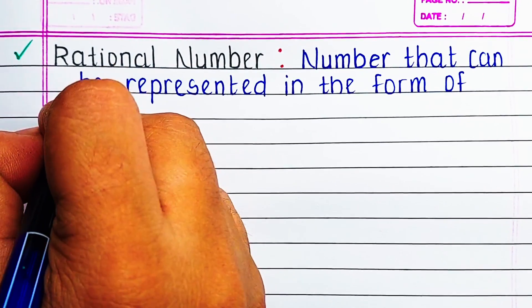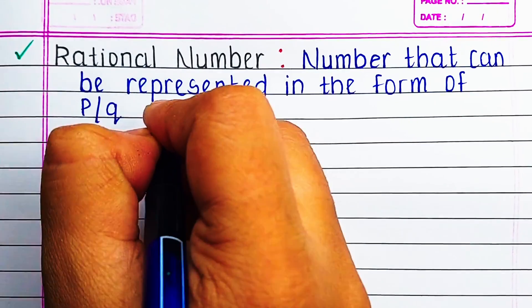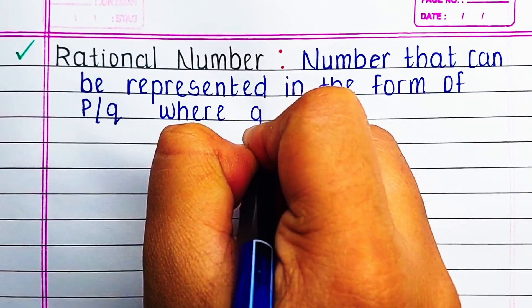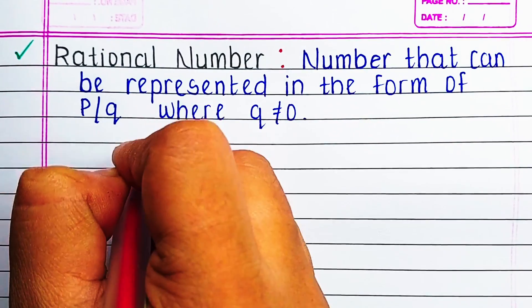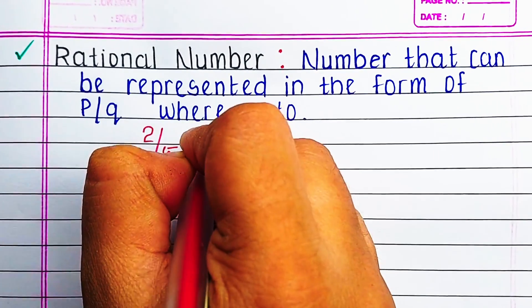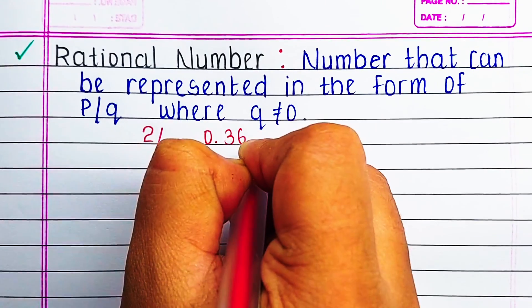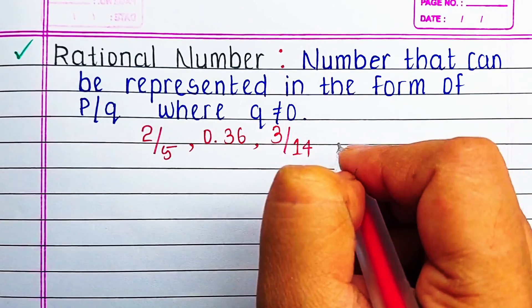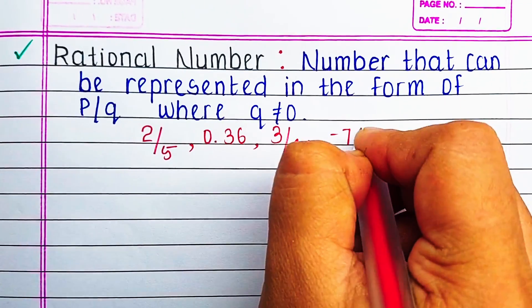Next is rational numbers. Numbers that can be represented in the form of p by q where q is not equal to 0 are known as rational numbers. For example, 2 by 5, 0.36, 3 by 14, minus 7 by minus 5 and so on.